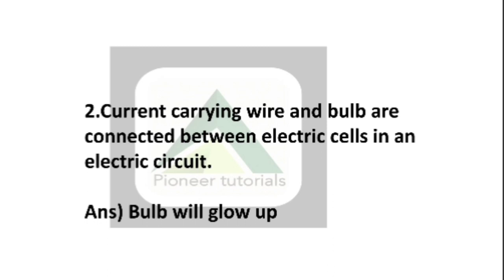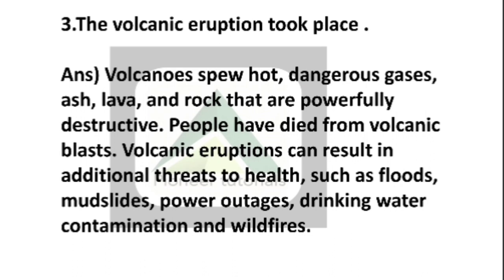Question 9, part 2: A current-carrying wire and bulb are connected between an electric cell in an electric circuit — the bulb will glow. Question 9, part 3: The volcanic eruption took place. Answer: volcanoes spew hot, dangerous gases, ash, lava and rock that are powerfully destructive. People have died from volcanic blasts. Volcanic eruption can result in additional threats to health such as floods, mudslides, power outages, drinking water contamination and wildfires.